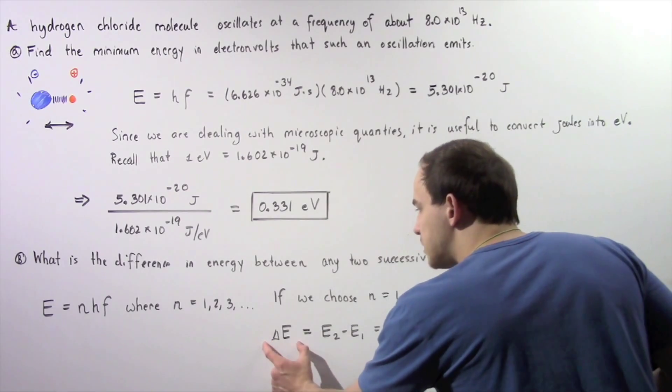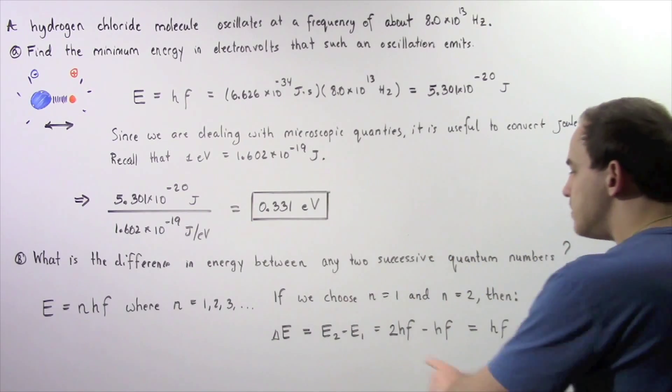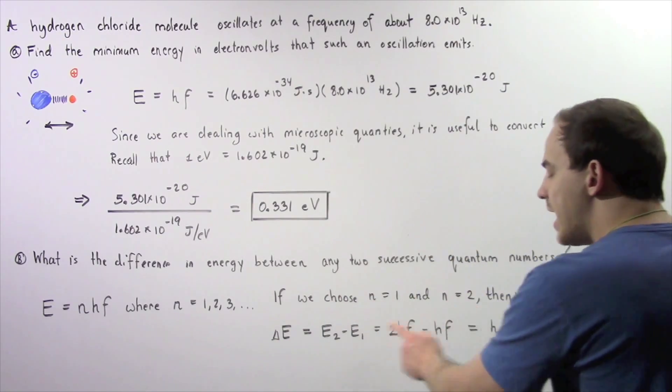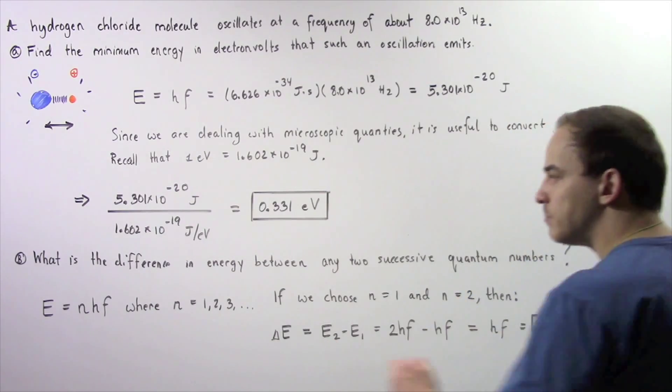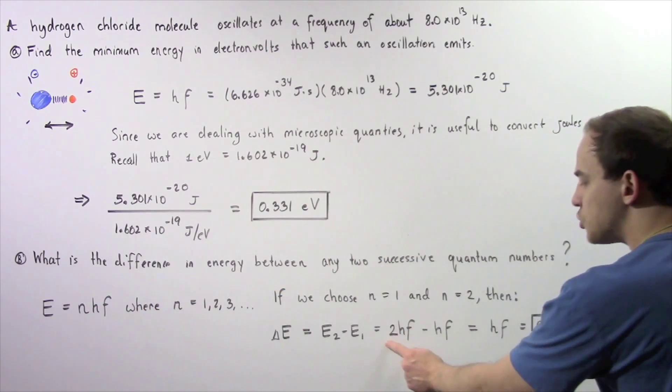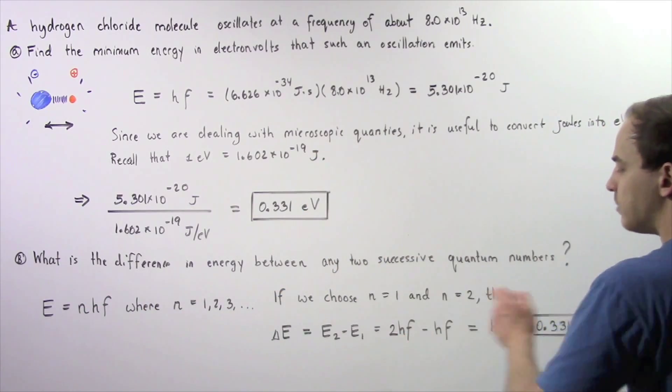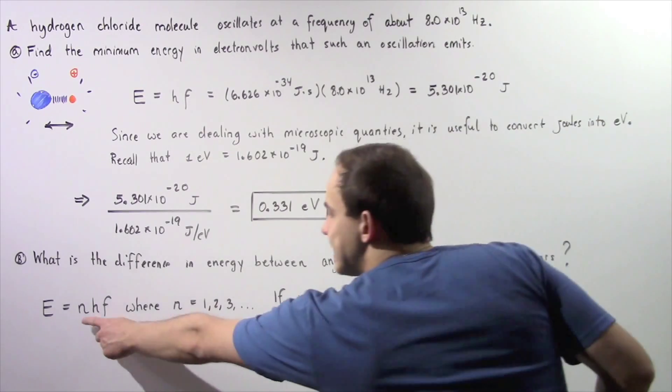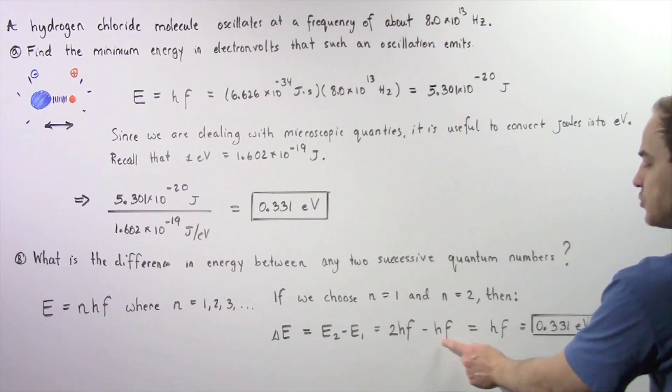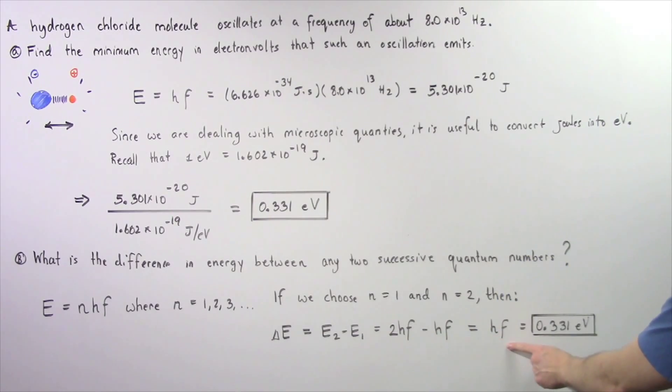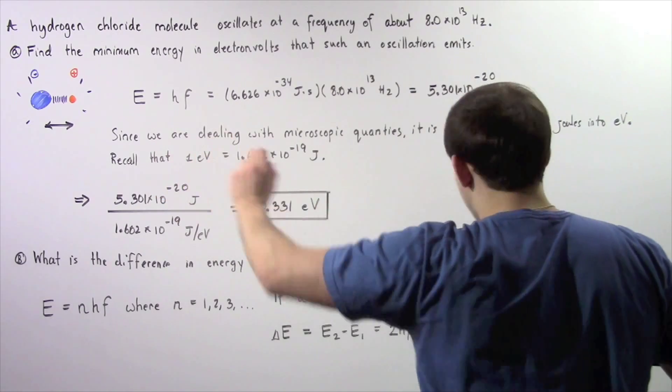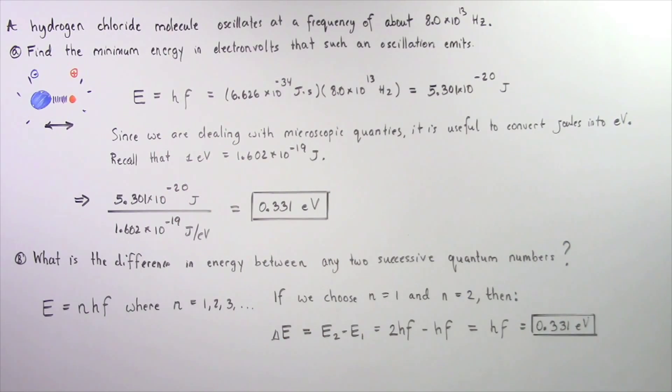So, the change in energy between any two quantum numbers, N equals 1 and 2, is equal to E2 minus E1. Where E2 is simply N equals 2, so it's 2 multiplied by H multiplied by F. And this is N equals 1, so it's simply H times F. So, this is equal to simply H times F, and we know from Part A, H times F is simply equal to 0.331 electron volts.